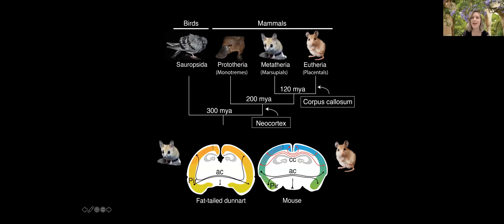Our particular model organism, which even people in Australia have never heard of, is the fat-tailed dunnart — a small, mouse-sized marsupial of which we have a captive breeding colony. There are also monotremes as another group of mammals, which includes the egg-laying mammals: the platypus and echidna. When comparing adult brain architecture of marsupials and mice, those familiar with coronal brain sections will see a lot of homology and conservation of structures.